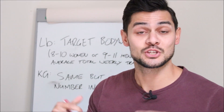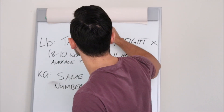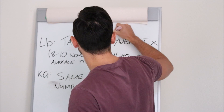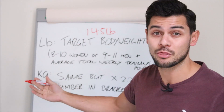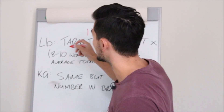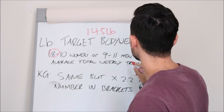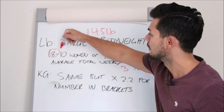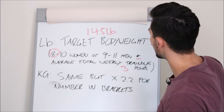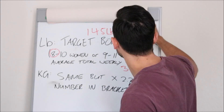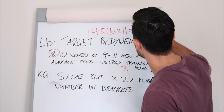This is a lot easier to understand with an example. Let's take a woman who is aiming to be 145 pounds. She's very sedentary and trains three hours per week. So we would choose the number eight, plus average total weekly training hours — that's three. So eight plus three is 11, and then 11 times 145. What is that?